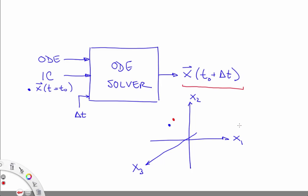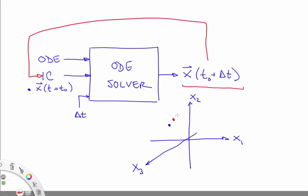You can then put the ODE solver in a loop in order to generate the next point after that, and the next point after that, and so on and so forth. You would feed this back, and what you would get out is the next point.